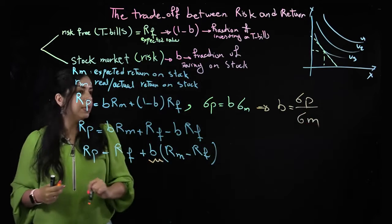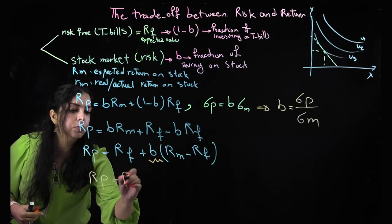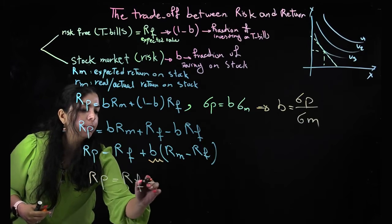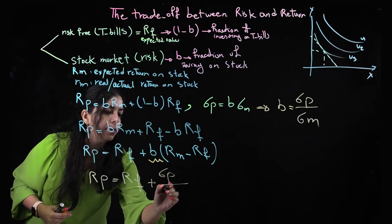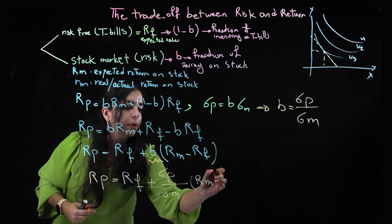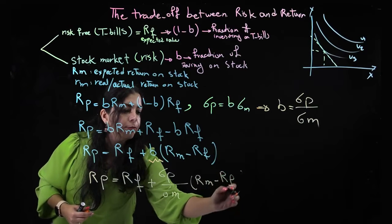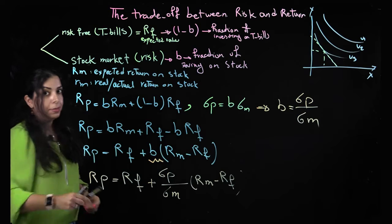So then I replace it here. So it means that rp is equal to rf plus sigma p over sigma m times rm minus rf. Right? Okay, gradually something is appearing.